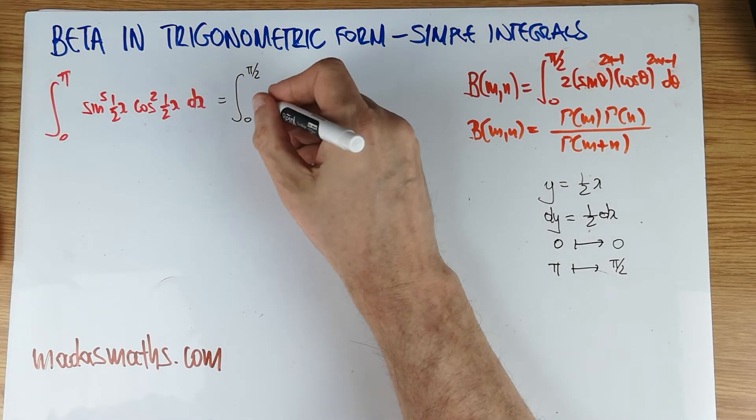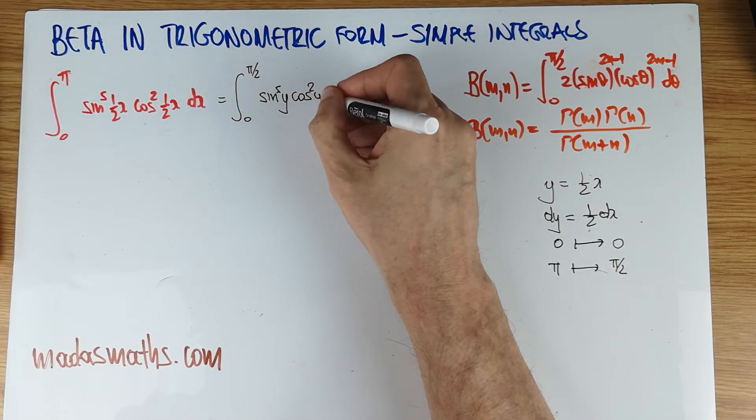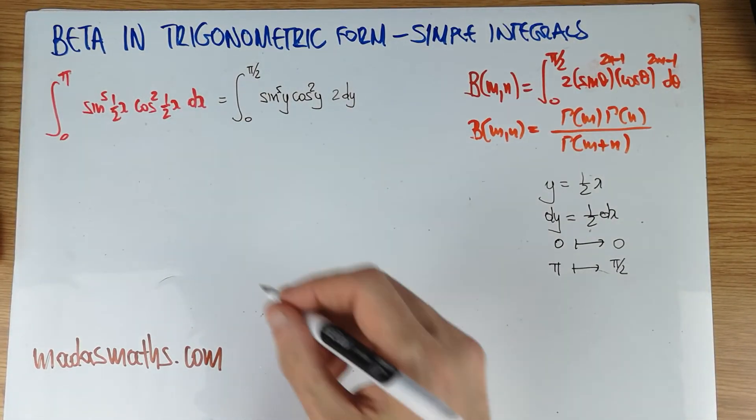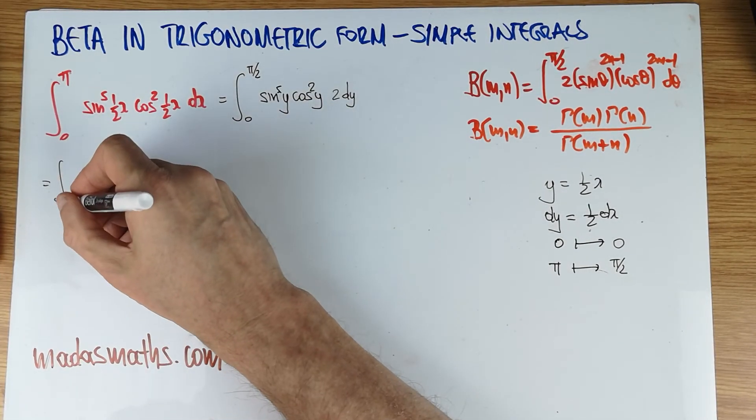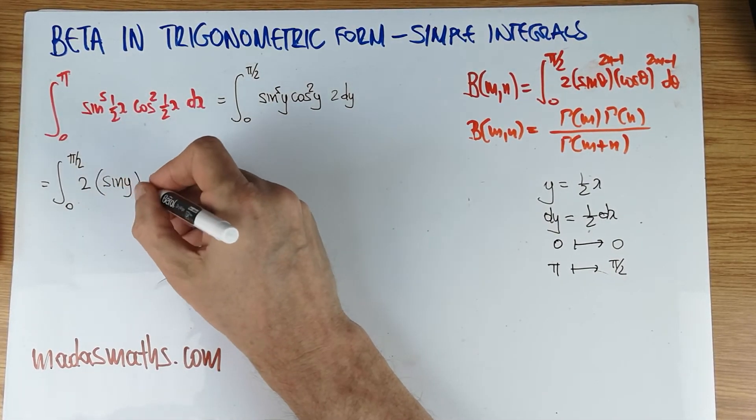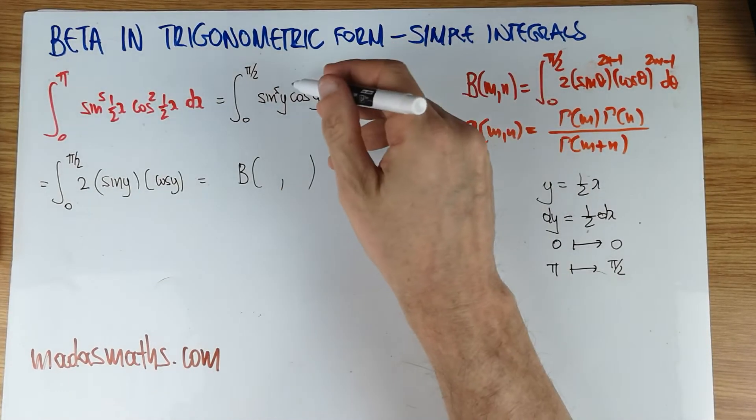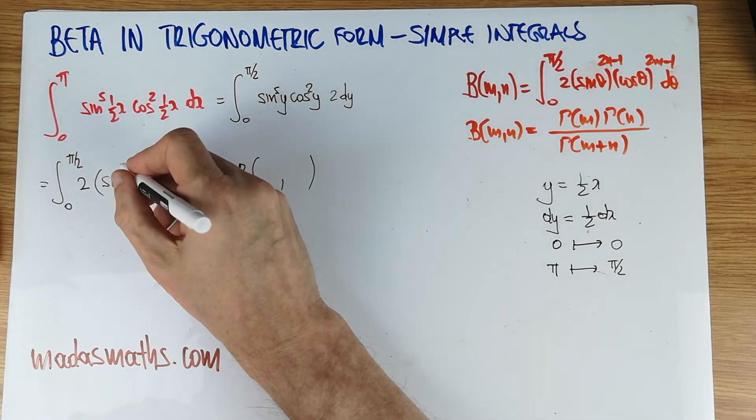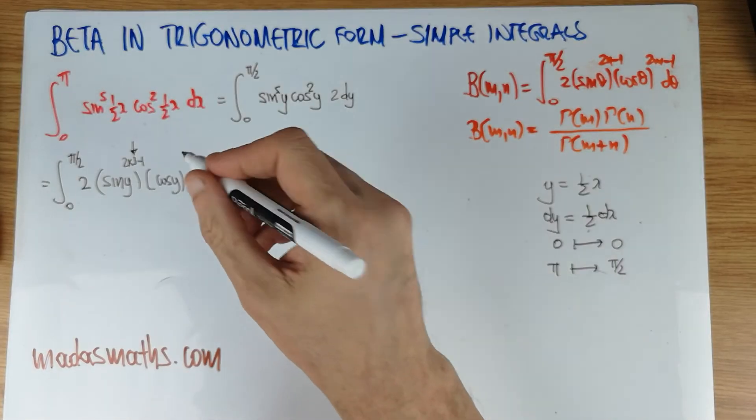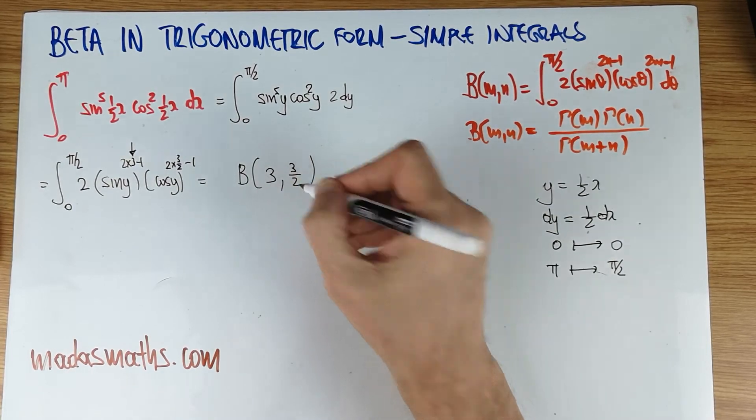So, that is 0 to pi over 2. Sine to the power of 5. So, that's that bit there. And a similar one for the cos. And the dx is going to be 2 lots of dy. But, of course, we need the 2 there. And we got the 2. So, we have very little to do on this one. So, 0 to pi over 2. Let's write this 2 at the front from the 2 dy. And the sine of y and the cos of y. We need to know now what beta we have in here. 5. Add 1 is 6. Divide by 2 is 3. So, that's basically 2 times 3 minus 1. So, we're looking at this 3. And in order to get a 2, add 1 is 3. So, it's 3 over 2. So, it's 2 times 3 over 2 minus 1. So, that's the particular beta we're looking for.